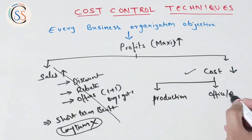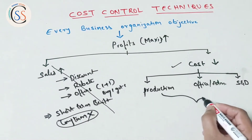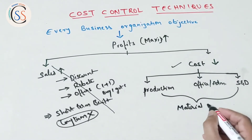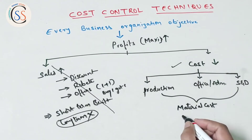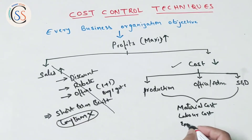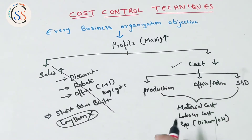Cost has three main areas: first, Production; second, Office or Administration; and third, Selling and Distribution. Within production, costs are further divided into material cost, labor cost, direct expenses, and overheads. The same classification applies to office administration. Material cost is one of the three primary cost components.